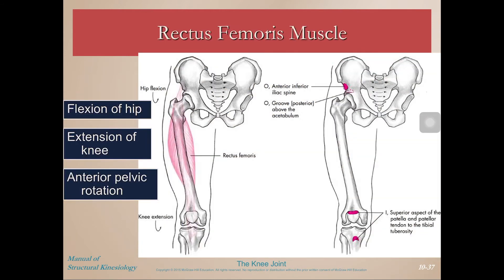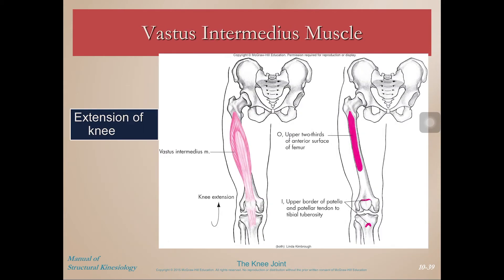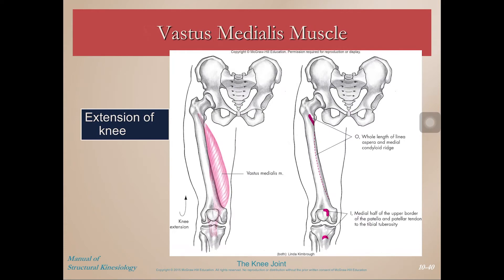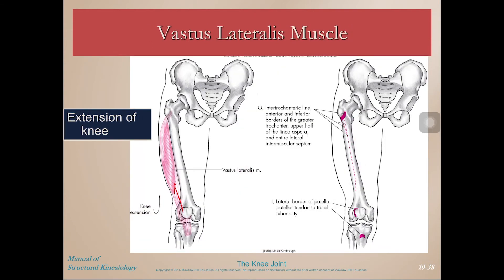Now onto the musculature individually. Rectus femoris — some of this should be reviewed from the hip section — has flexion of the hip, extension of the knee, and recall that flexion of the hip goes along with anterior pelvic rotation. Then we have the three vasti muscles. These have just one single action for such large muscles, and that would be extension of the knee. Notice that vastus lateralis, intermedius, and medialis all have slightly different lines of pull. Because there are three different force vectors we want to strengthen these all in unison, so we don't want something like vastus lateralis to get too strong and take over, causing patellar tracking problems or other issues.